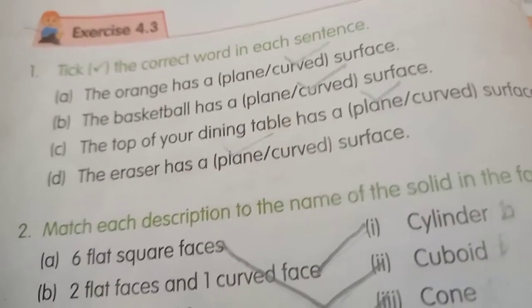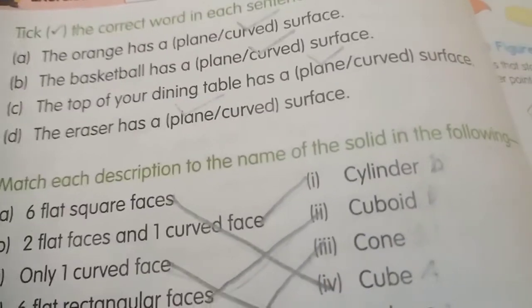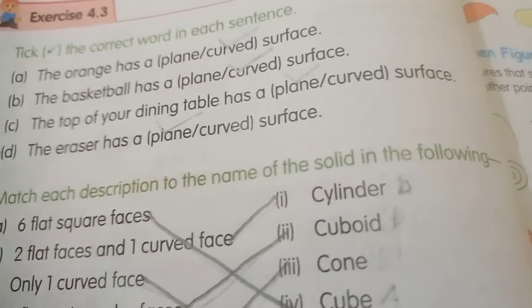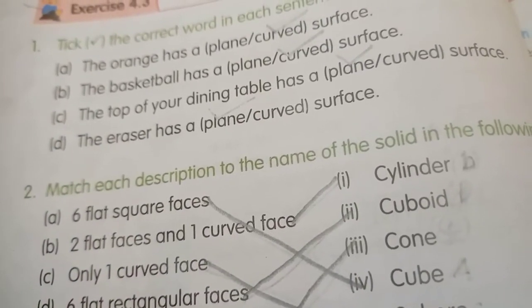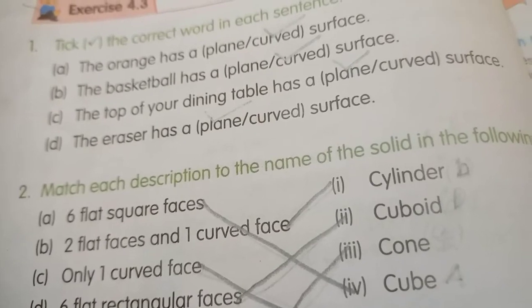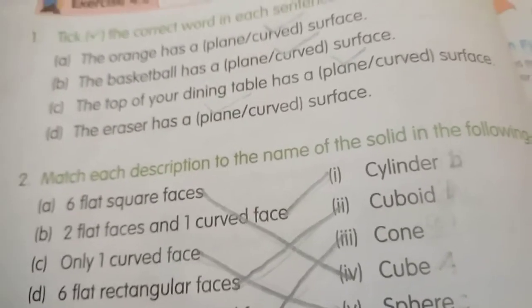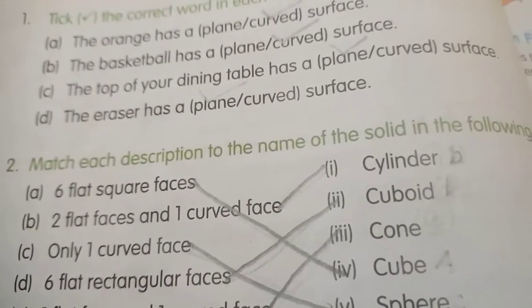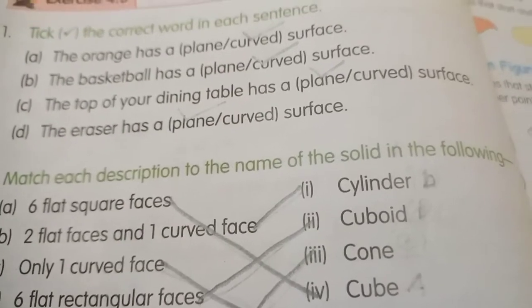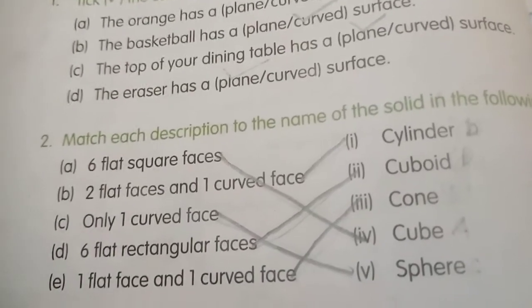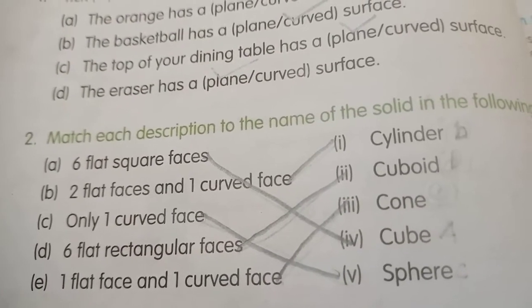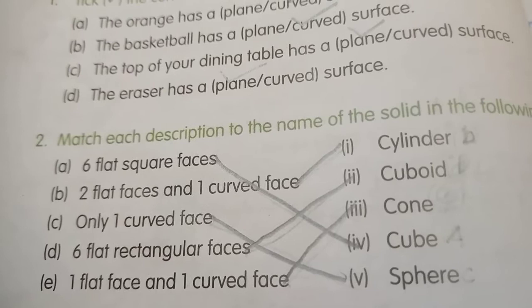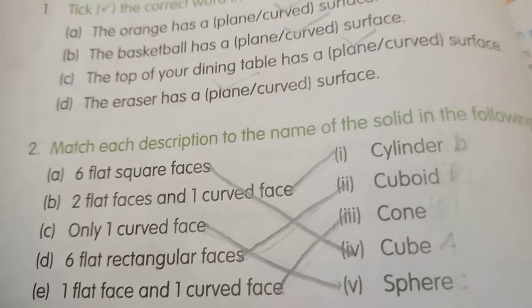Second, match each description to the name of the solid. Six flat square faces - that's a cube. Two flat faces and one curved face - that's a cylinder. Only one curved face - that's a sphere. Six flat rectangular faces - that's a cuboid. One flat face and one curved face - that's a cone.